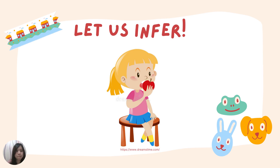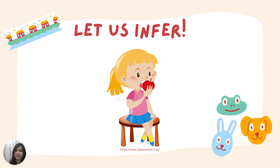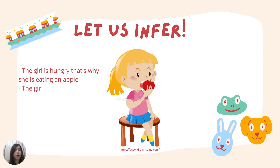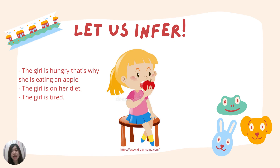Let us use this picture again. How does she feel? Why is she sitting there? Why does she only eat an apple? We can say that the girl is hungry, that's why she is eating an apple. Or the girl is on a diet, that's why she only eats an apple. Or the girl is tired, that's why she is sitting there.